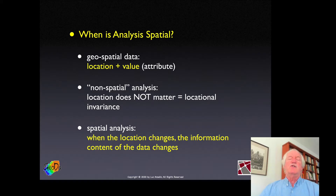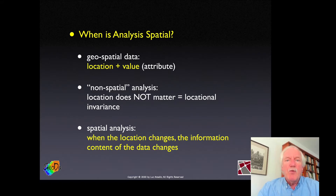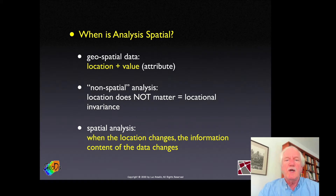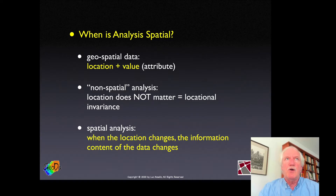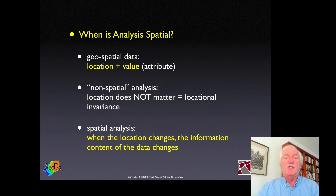How is spatial analysis different from any other analysis? What is special about the spatial stuff? In spatial analysis we have two types of information: one pertains to geography and location, the other to regular attribute variables. The critical part is the combination of location with attribute information. In non-spatial analysis, location doesn't matter — that's called locational invariance, meaning you can shuffle things around in space and the outcome is the same. In spatial analysis, when you change the location, the information content changes.